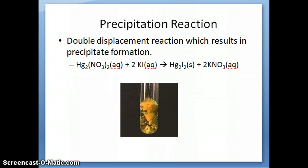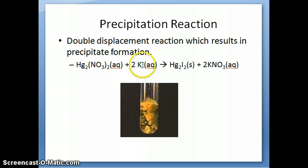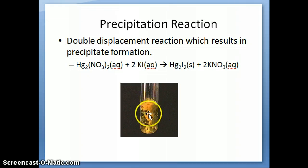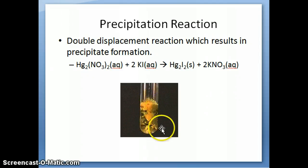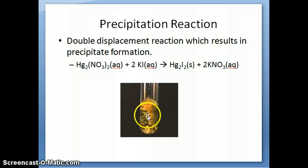The precipitation reaction is the double displacement reaction where you form a precipitate or a solid as a result of the reaction. Here's an example: when you mix mercury(I) nitrate and potassium iodide both in aqueous solution — so they're both soluble — once you put them together, you'll immediately see this yellow solid forming as soon as the two solutions come in contact with each other. That yellow solid or yellow precipitate is mercury(I) iodide, and that's what's illustrated in this particular picture. The result of a precipitation reaction is usually one of the compounds will precipitate and you can see it pretty clearly in the test tube.